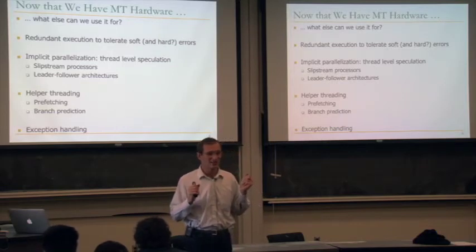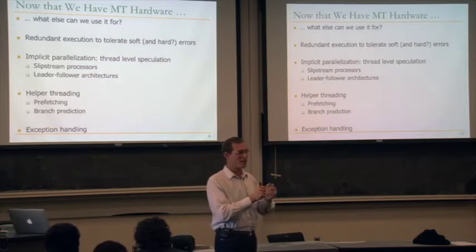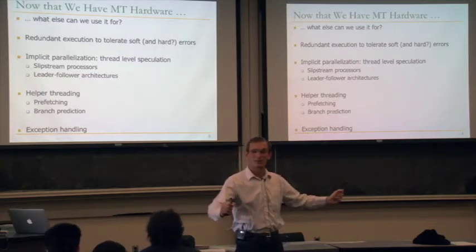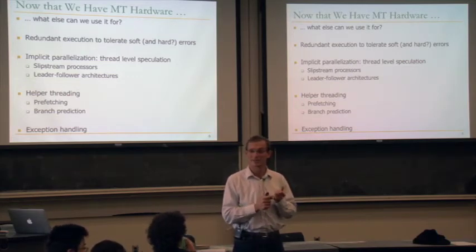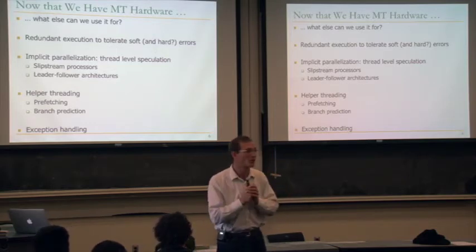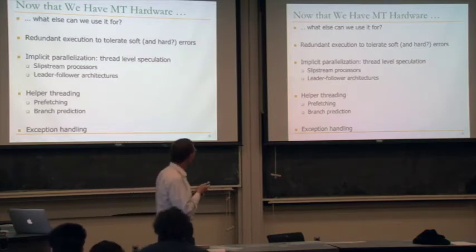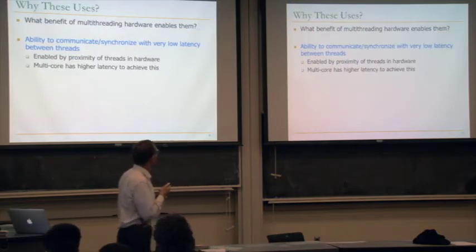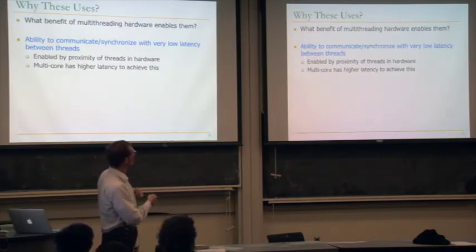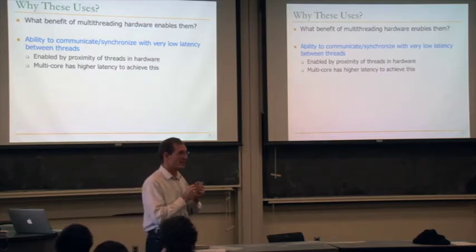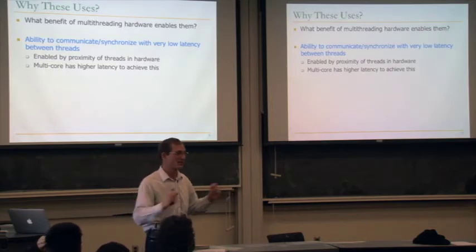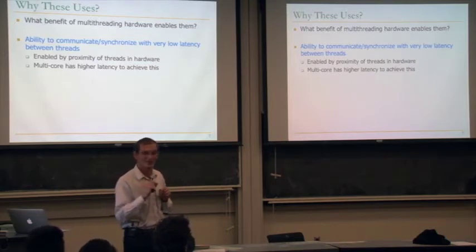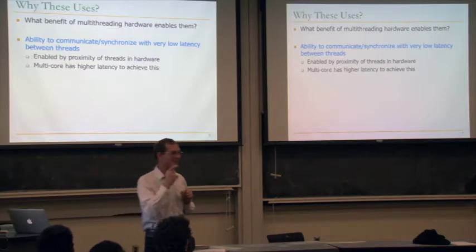The ideas we'll talk about are more general — not specific to multi-threading hardware. When you have multiple cores, multiple processing engines, or multiple hardware contexts, how can you take a single-threaded program and have it execute in parallel on these hardware contexts, implicitly, without programmer support? The key benefit of multi-threading is low-latency communication and synchronization between threads, which is especially important for fine-grained implicit parallelization and fast detection of dependency violations.